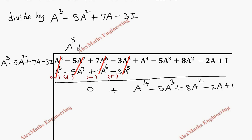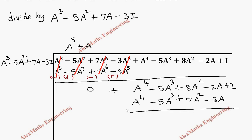To match A power 4, we multiply the divisor by A, giving A cubed times A equals A power 4, then minus 5A cubed, plus 7A squared, minus 3A. We subtract again, changing signs. A⁴ minus A⁴ cancels; minus 5A³ plus 5A³ cancels. Remaining: 8A² minus 7A² is A squared; minus 2A plus 3A is A; then plus I.